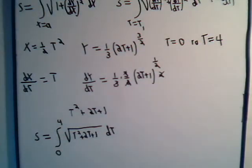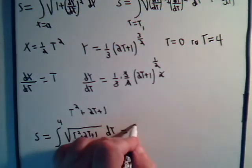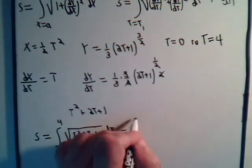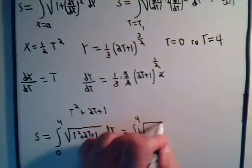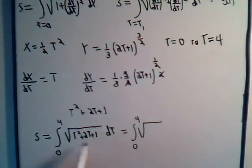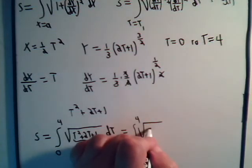And it looks like we can rewrite that from 0 to 4, the square root of (t + 1) squared. Multiply that out, we have t² plus 2t plus 1, we're okay with that.